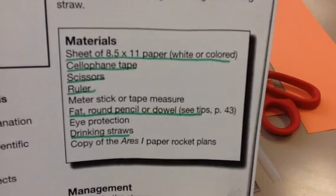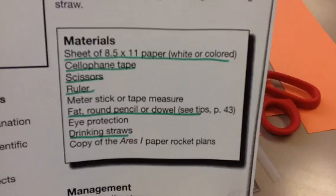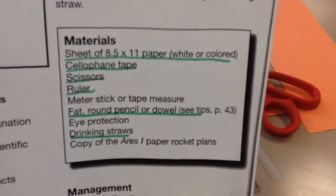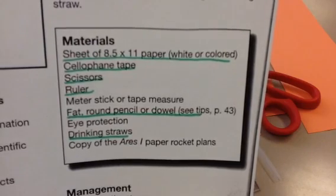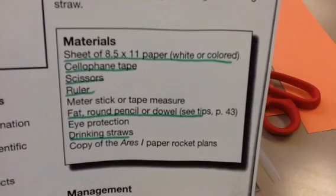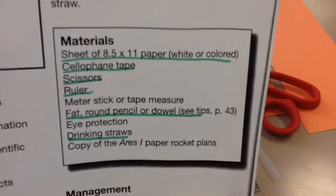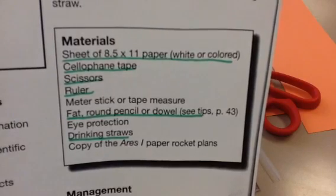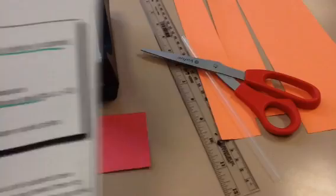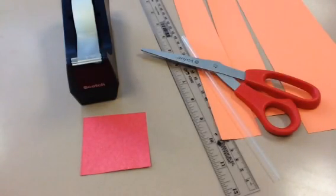Underlined in green are the materials you need to assemble. You can also see these materials on the Moodle document, the 321 puff document I have placed there. You need a sheet of paper, 8½ by 11, white or colored paper, cellophane tape which is the same as scotch tape, scissors, ruler, a round pencil, coloring pencils work all right, and a drinking straw if you want to test your rocket at home.